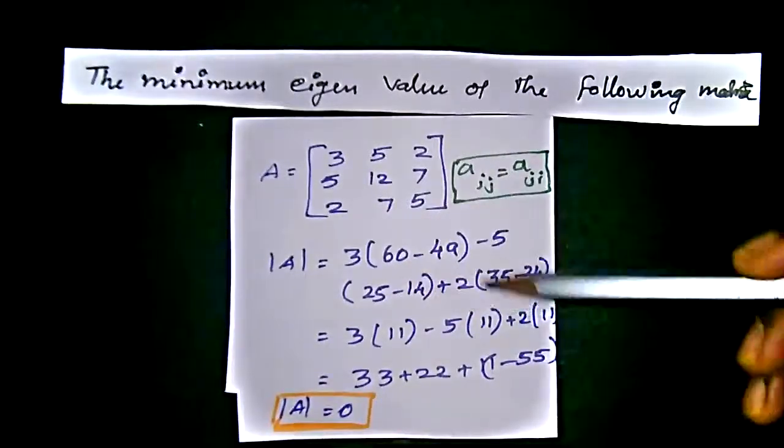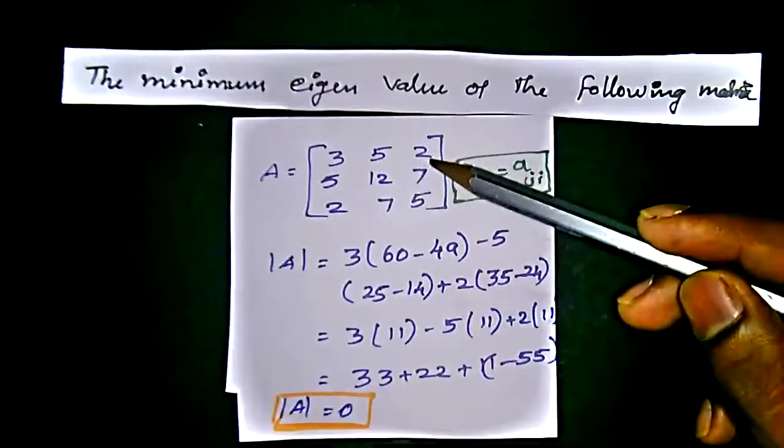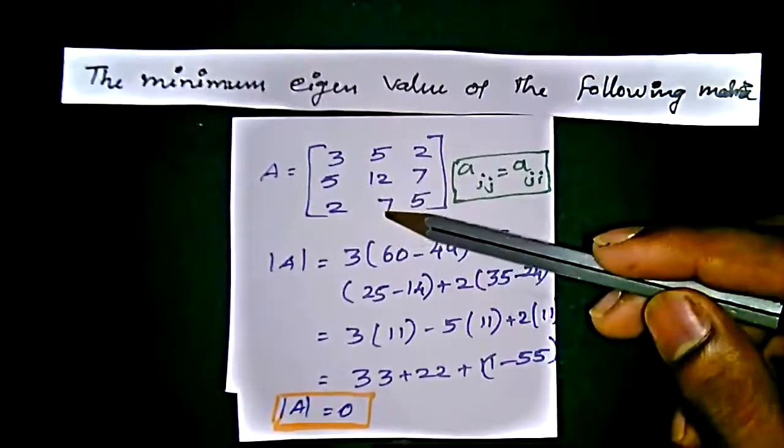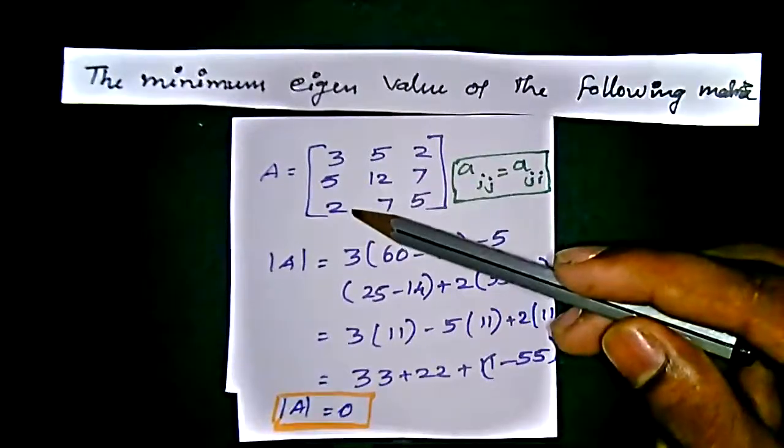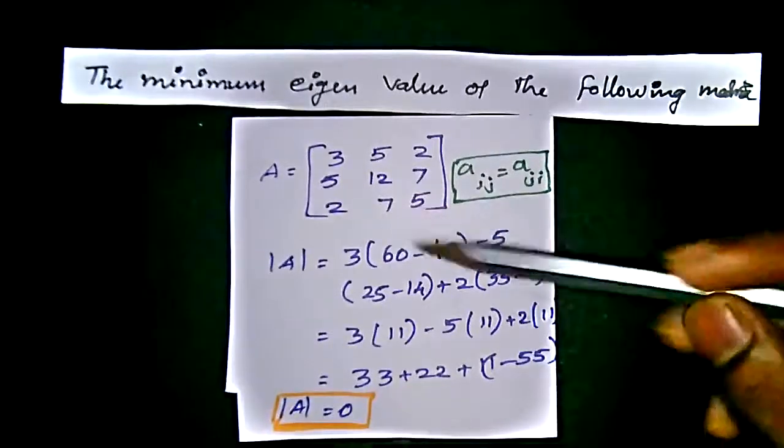That is 25 minus 14, plus 2 times 5 times 7 equals 35, minus 2 times 12 is 24.